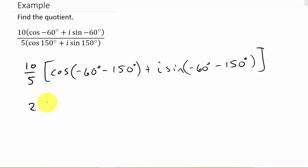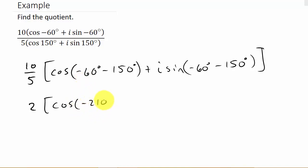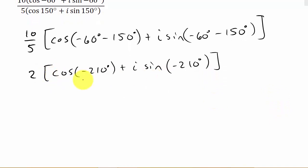10 over 5 is just 2, and then that's going to be 2 times the cosine, and then this is negative 210. So that's cosine of negative 210 degrees plus i times sine of negative 210 degrees. This is what we get when dividing, and this is the solution in trigonometric form.